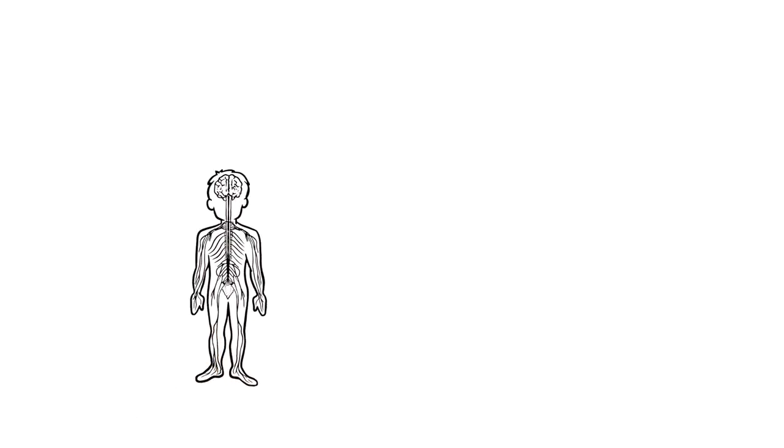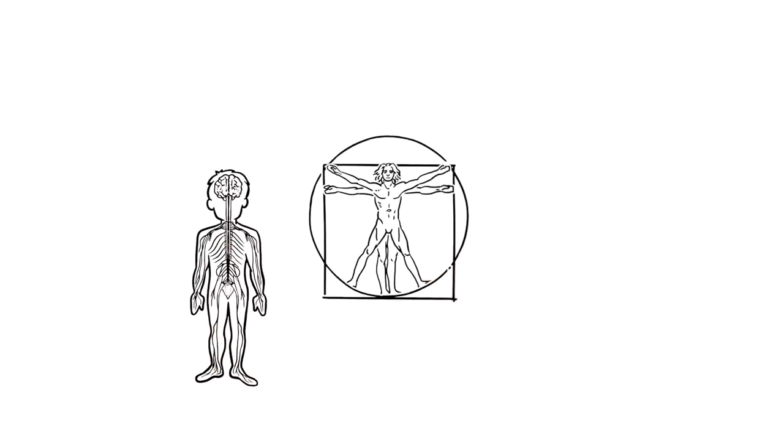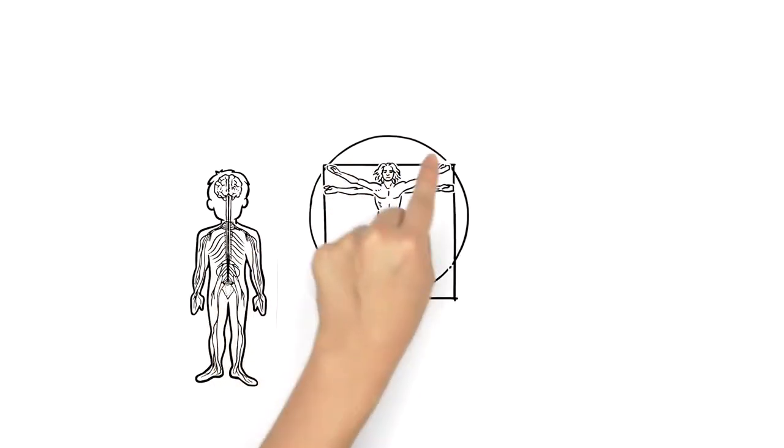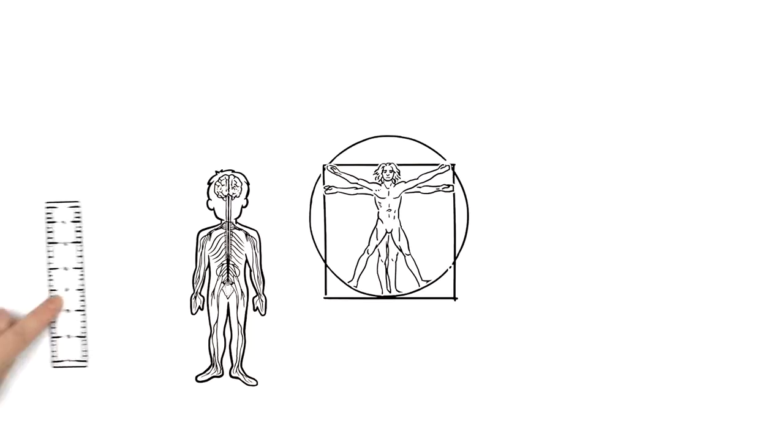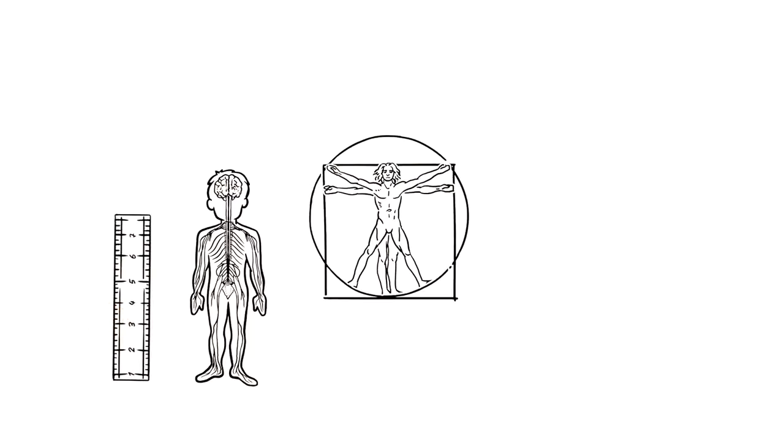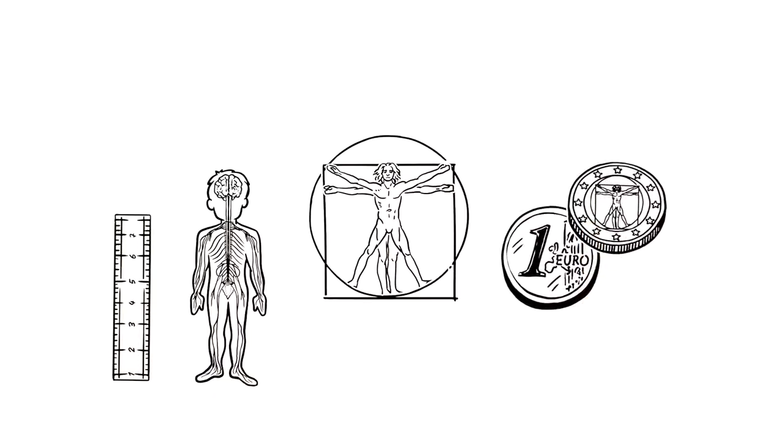Anatomy is also the focus of the Vitruvian man, a human being standing in the center of a circle and a square. Leonardo's groundbreaking drawing depicts the ideal human body measurements and proportions. Today, the drawing is featured on Italy's one-euro coin.